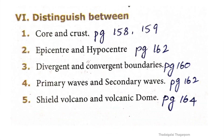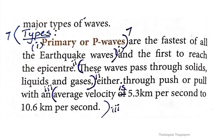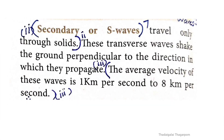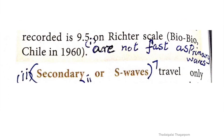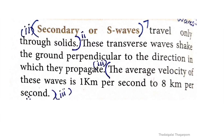Fourth point: primary waves and secondary waves. Answer given in page 162. Primary waves (P-waves) are the fastest of all earthquake waves; they pass through solids, liquids, and gases; average velocity is 5.3 to 10.6 km per second. Secondary waves (S-waves) are not as fast as primary waves; they travel only through solids; average velocity is 1 to 8 km per second.